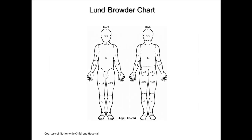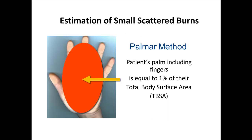The head and legs are the body surface areas that change proportionately with age. Once a child is older than 14, the adult rule of nines tool can typically be used to determine the total body surface area burned. In the Palmer method, the child's palm and fingers are equal to 1% of his total body surface area. This method is helpful when the burns are small and scattered irregularly.